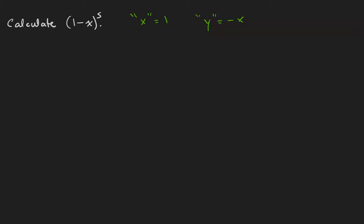Since this binomial is being raised to the fifth power, I'm going to need six rows of the binomial triangle. So 1, 1, 1, 1, 2, 1, 1, 3, 3, 1, 1, 4, 6, 4, 1. 1 plus 4 is 5, 4 plus 6 is 10, 6 plus 4 is 10, 4 plus 1 is 5, and the last number is 1.